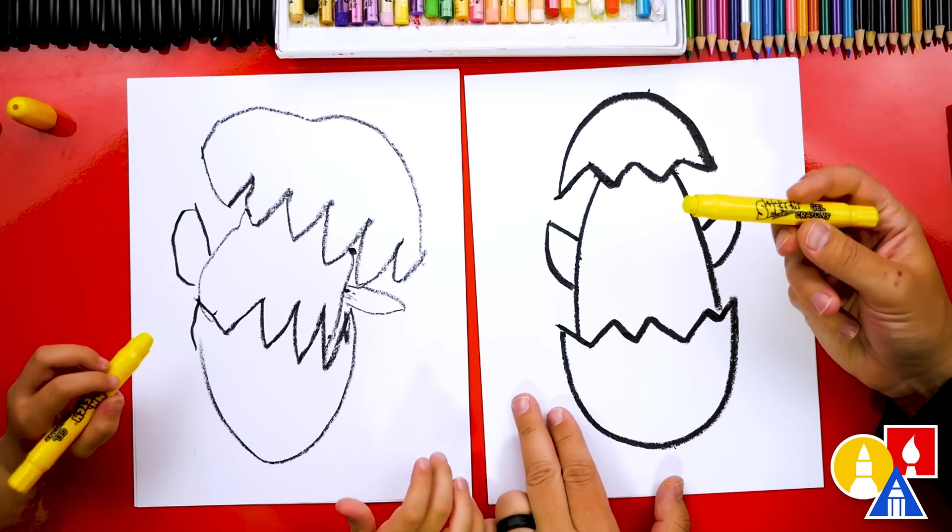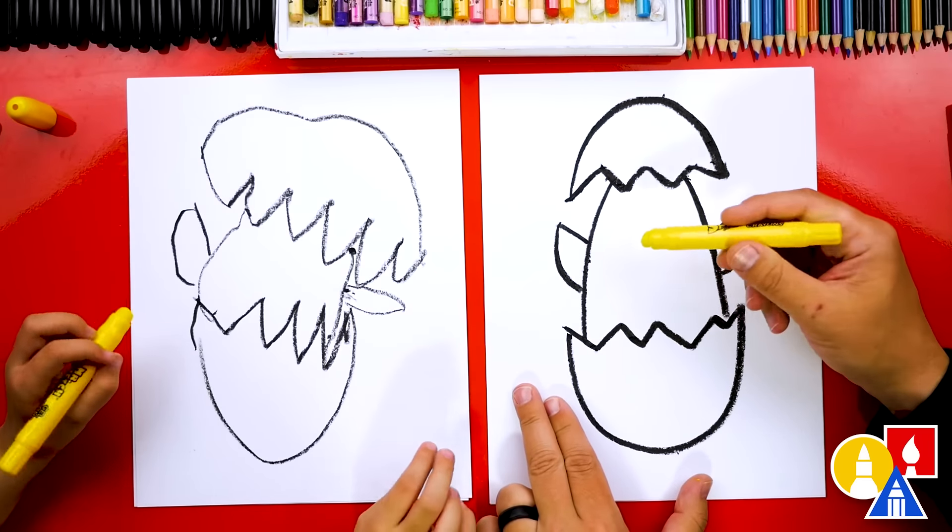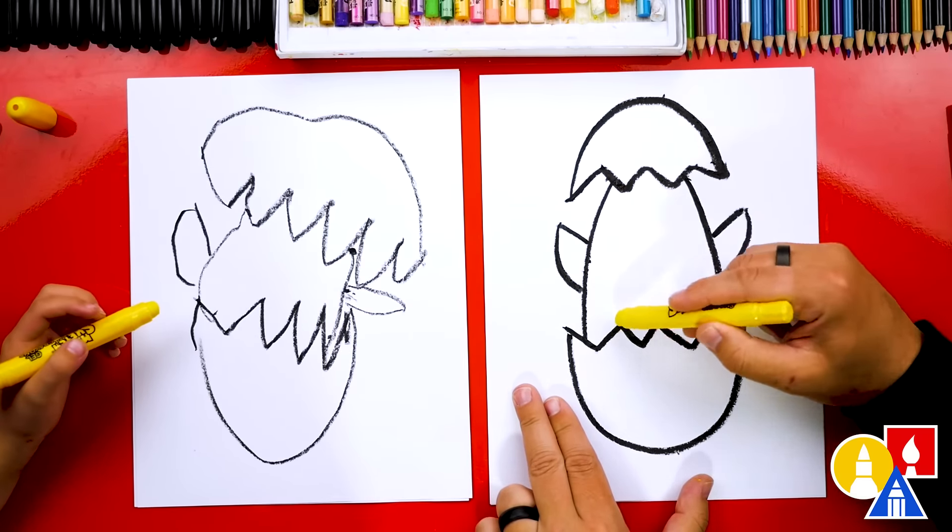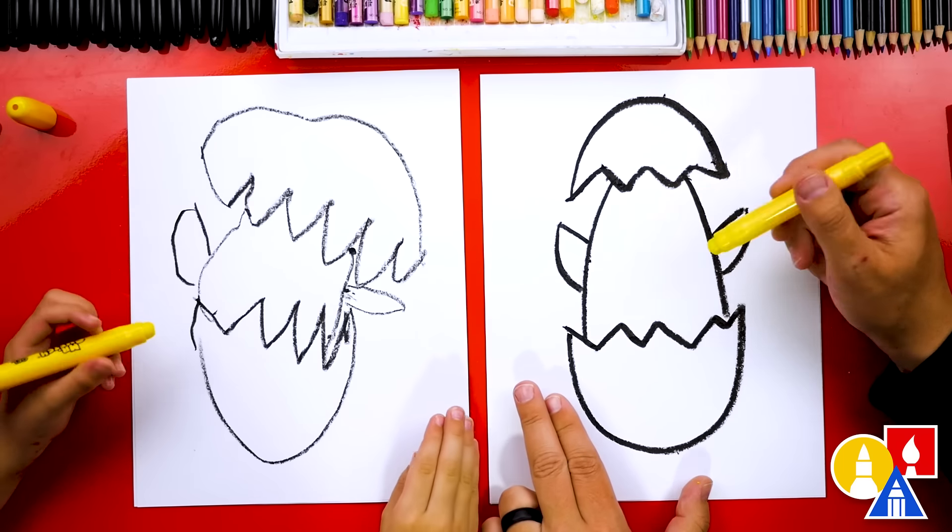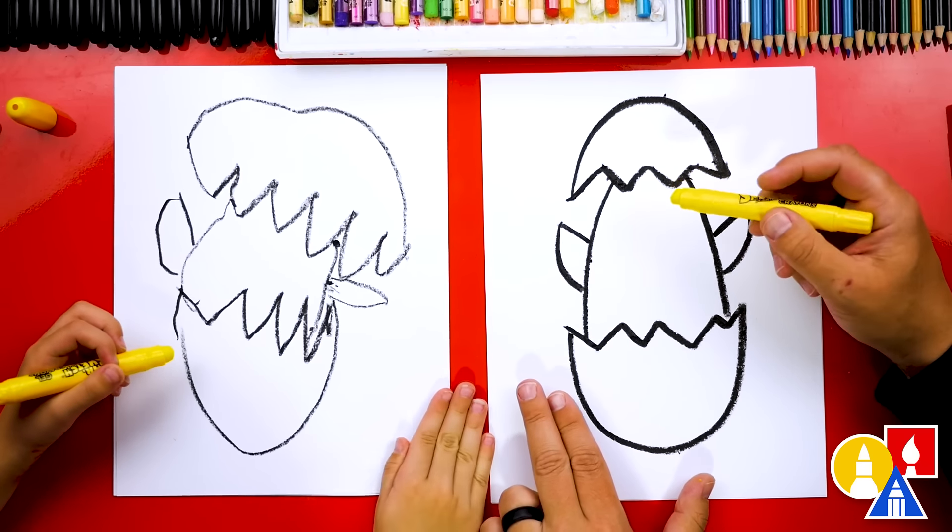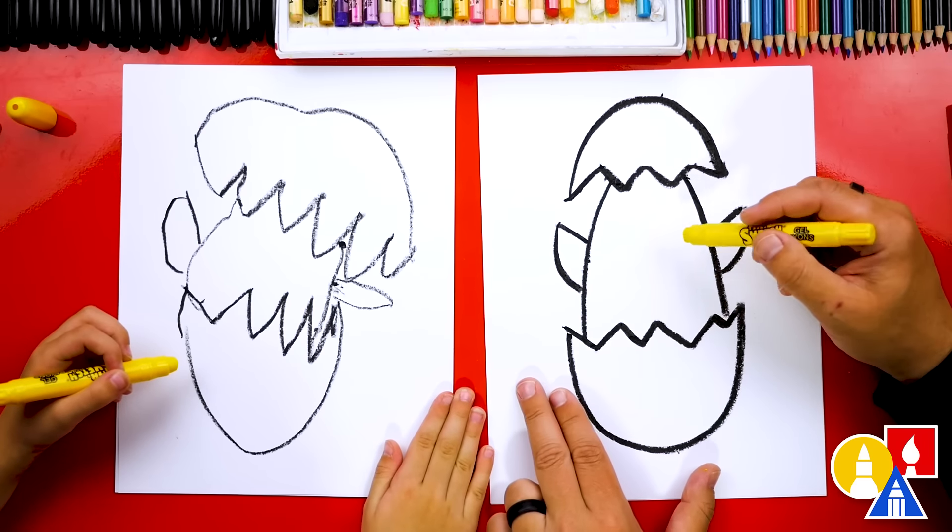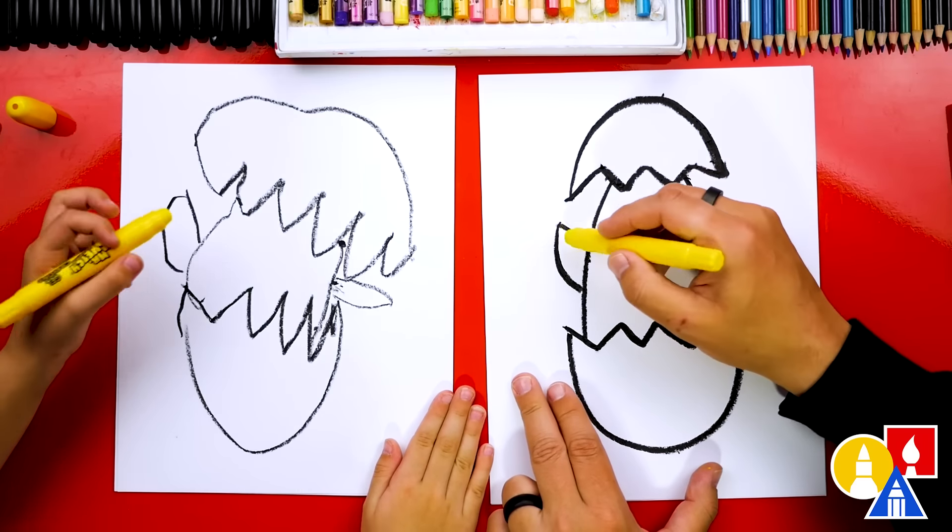Now let's switch to our yellow crayon and we're going to color in our baby chicken. So we're going to color the wings and also this big shape in the middle. This part we're going to fast forward. So remember to pause the video and take time to color in your baby chicken too. You ready to fast forward? Yeah.